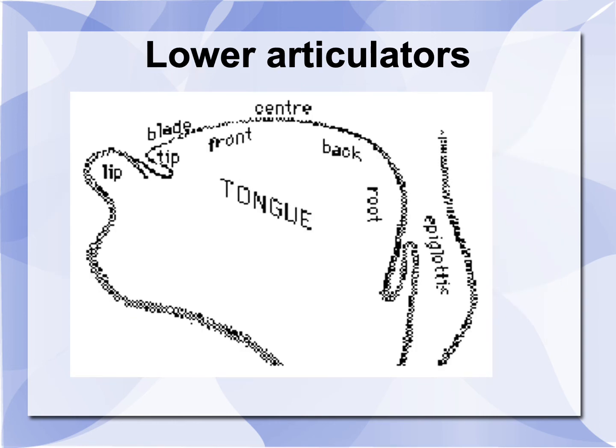Lower articulators. We will start with the lower lip. Then we have the most important articulator, the tongue. This is made up of the tip, the blade, the front, the center, the back, the root, and the epiglottis.